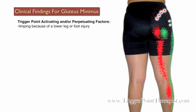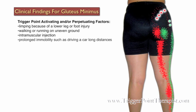Some activating factors for gluteus minimus trigger points include limping because of a lower leg or foot injury, walking or running on uneven ground, intramuscular injection, prolonged immobility such as driving a car for long distances, true SI joint dysfunction, and sitting on a wallet.